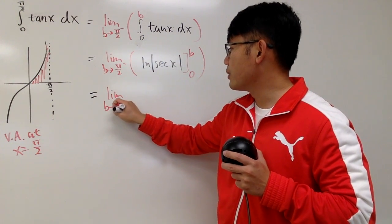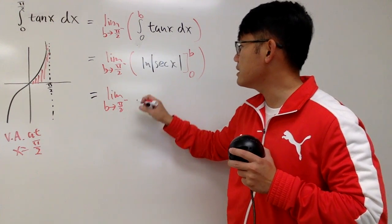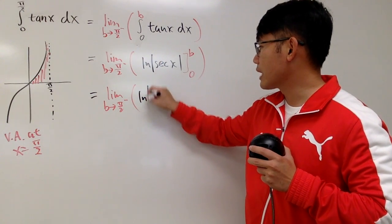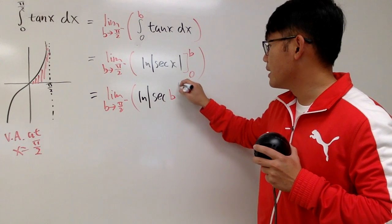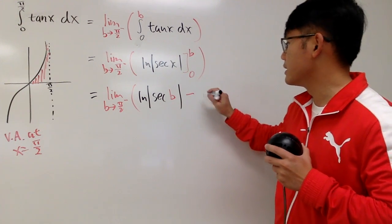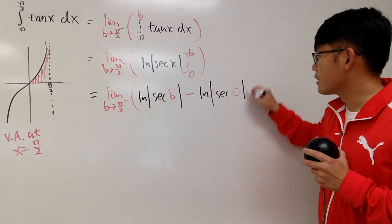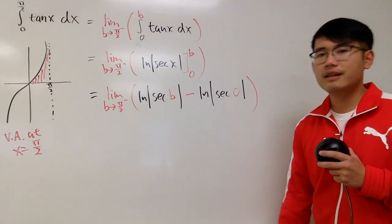The limit as B going to pi over 2 minus. Okay, put down B, put down 0. So, first, you have natural log absolute value, secant B, absolute value, and then you subtract. Natural log absolute value of secant 0. Close that, close that, right?